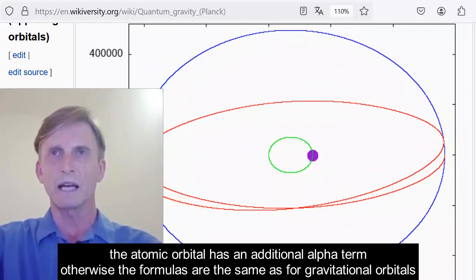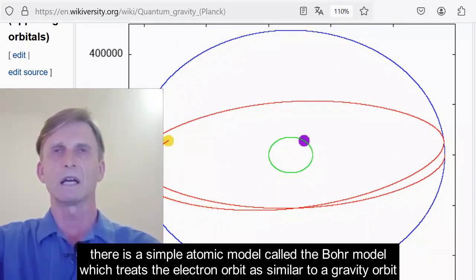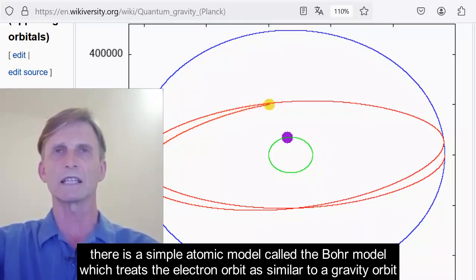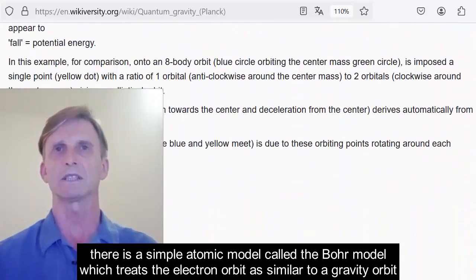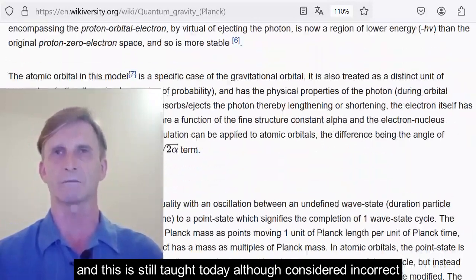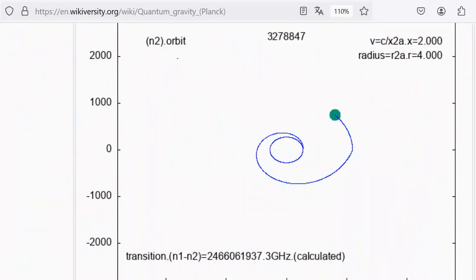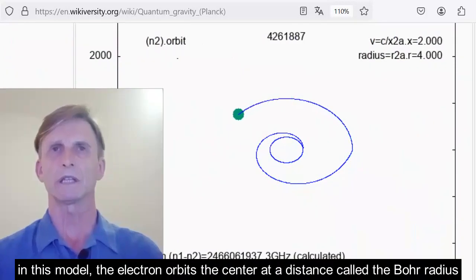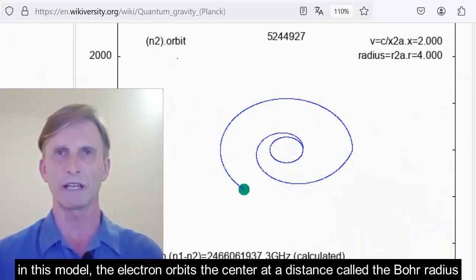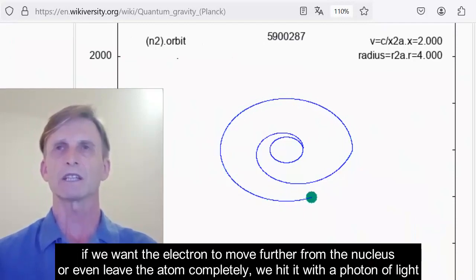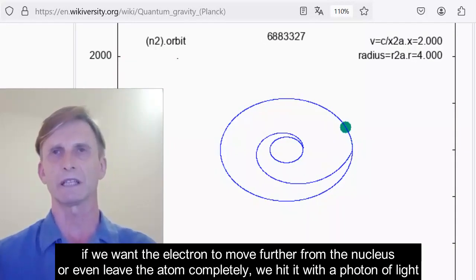The atomic orbital has an additional alpha term. Otherwise, the formulas are the same as for gravitational orbitals. There is a simple atomic model called the Bohr model, which treats the electron orbit as similar to a gravity orbit. And this is still taught today, although considered incorrect. In this model, the electron orbits the center at a distance called the Bohr radius.